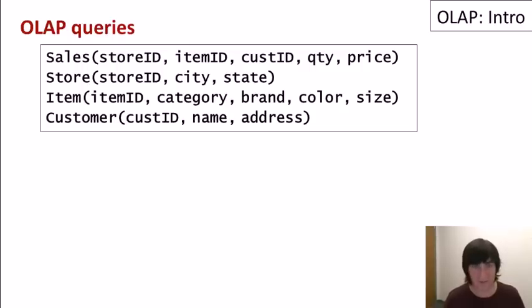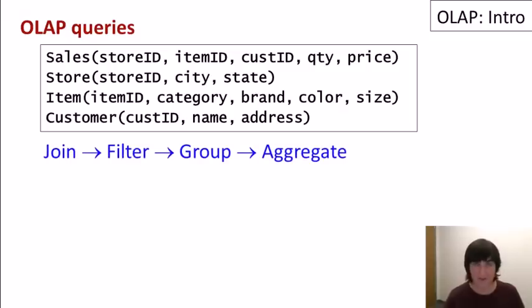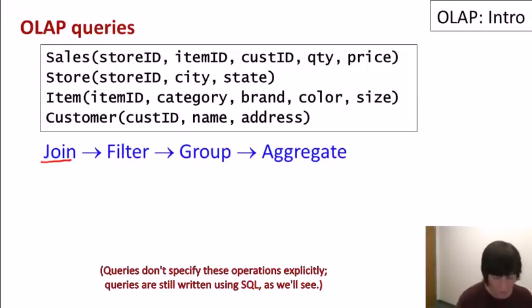So now that we know what a star schema looks like, let's look at the type of queries that are generally issued over this schema. And they're called OLAP queries. Typically, a query over a star schema will first join some or all of the relations. And when you're joining the sales, the fact table, with the dimension tables, you can almost think of it as expanding the facts in the sales table to include more information about the sales. Since we have the foreign keys, we'll be adding, for example, to the information about a sale more about the store, the city and state of the store. For a sale, the item will be adding the category brand and so on. So that's the join process.